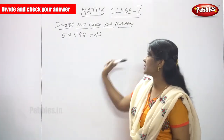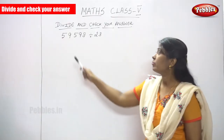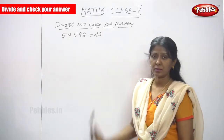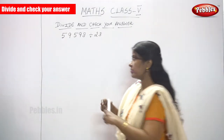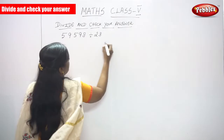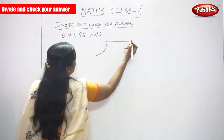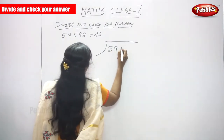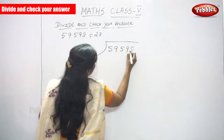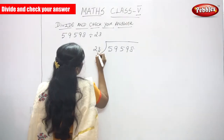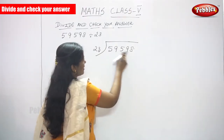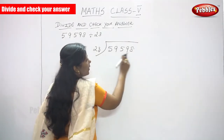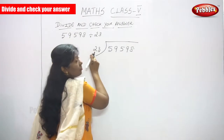Divide and check your answer. The question is 59,598 divided by 23. Now, we are going to do the division. I have told you this is the dividend and this is the quotient. So, you are going to divide this number with the help of 23.